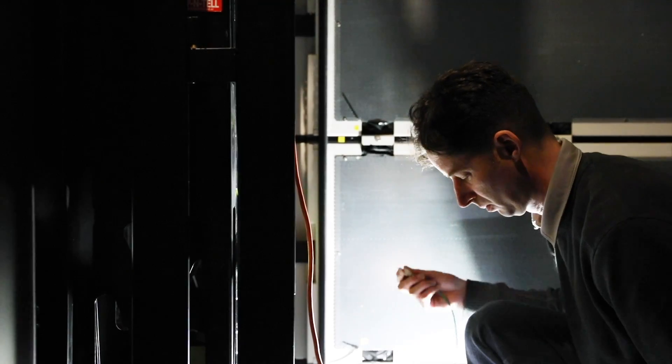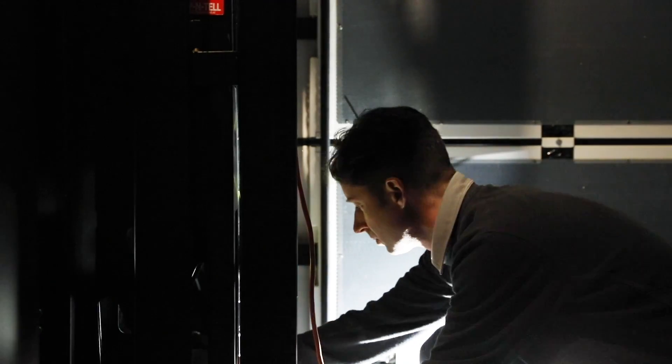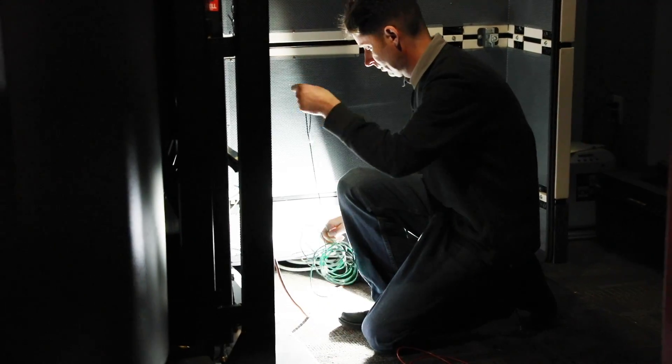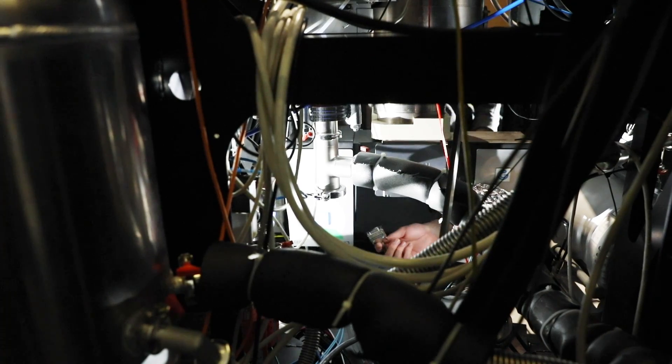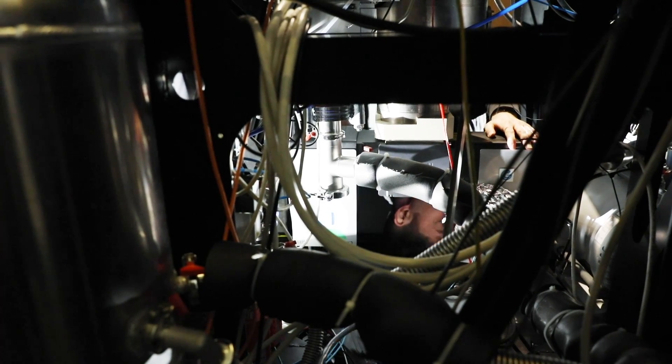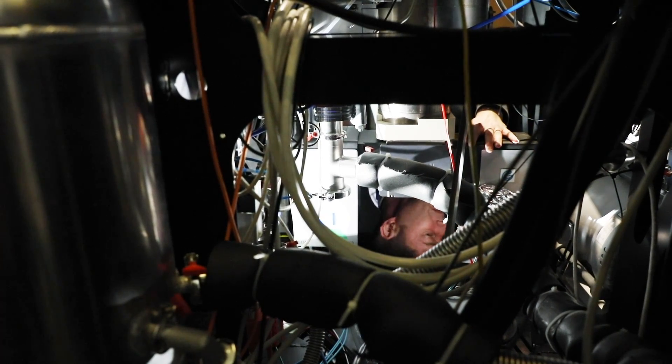Right now, the way that we run electron microscopes, we run them such that we throw away a lot of the scattered electrons because our detectors are too slow. So we decided to go to the absolute extreme and just try to capture every electron, capture all the scattered electrons we can and maximize the signal and noise. It means you get the most out of your sample before you eventually destroy it.